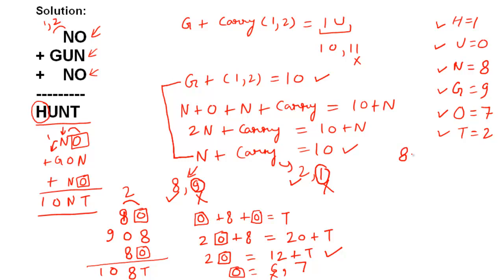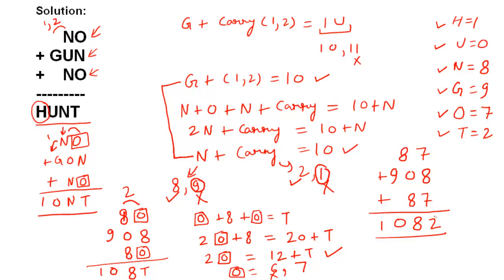So O = 7 and T = 2. The full sum is: 87 + 908 + 87 = 1082. Let's verify: 7 + 8 + 7 = 22, write 2 carry 2; 8 + 0 + 8 + 2 = 18, write 8 carry 1; 9 + 1 = 10, write 0 carry 1; giving 1082. Correct! All values found: N=8, O=7, G=9, U=0, H=1, T=2.